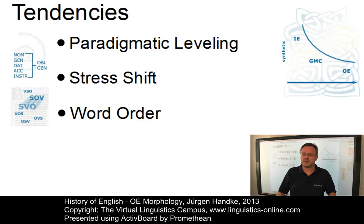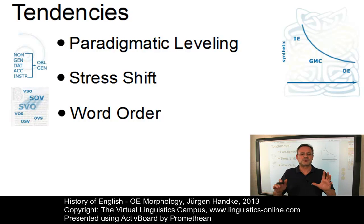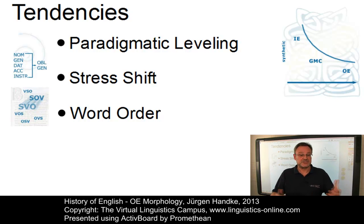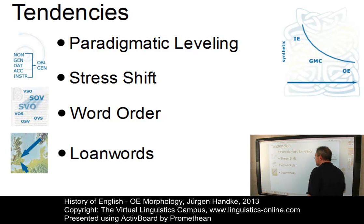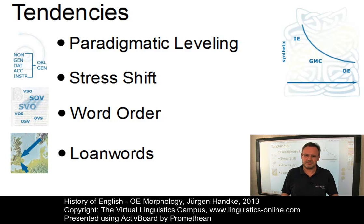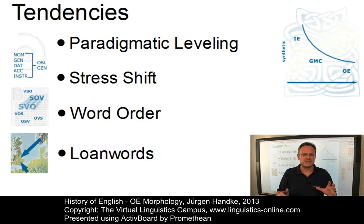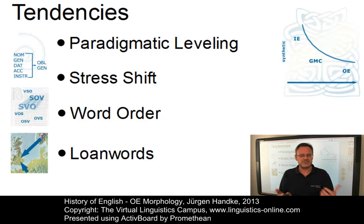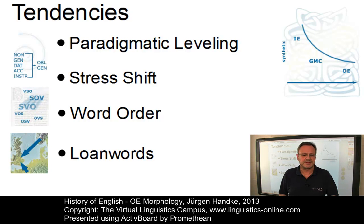Thus, syntax provided a kind of backup system for assuring intelligibility when inflections were lost. Hence, syntax, though not necessarily a cause and definitely not the focus of this e-lecture, was a contributing factor for the weakening of Old English inflections. And since in Old English the necessity arose to adopt thousands of loanwords from two other synthetic languages, namely Old Norse and Old French, a further effect could be seen.